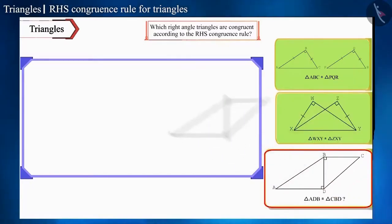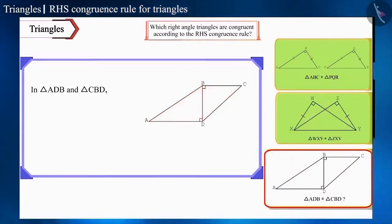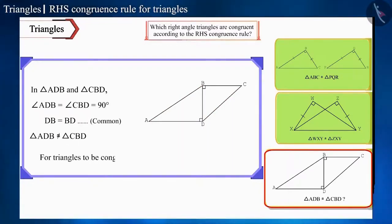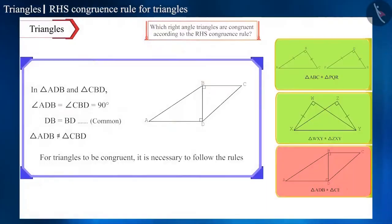Now let's move to the third pair. In the third pair of triangles also, only the right angles and one common side are equal, but their hypotenuse are not equal. Therefore, these triangles will not be congruent by the RHS congruence rule. Friends, for triangles to be congruent, it is necessary to follow the rules.